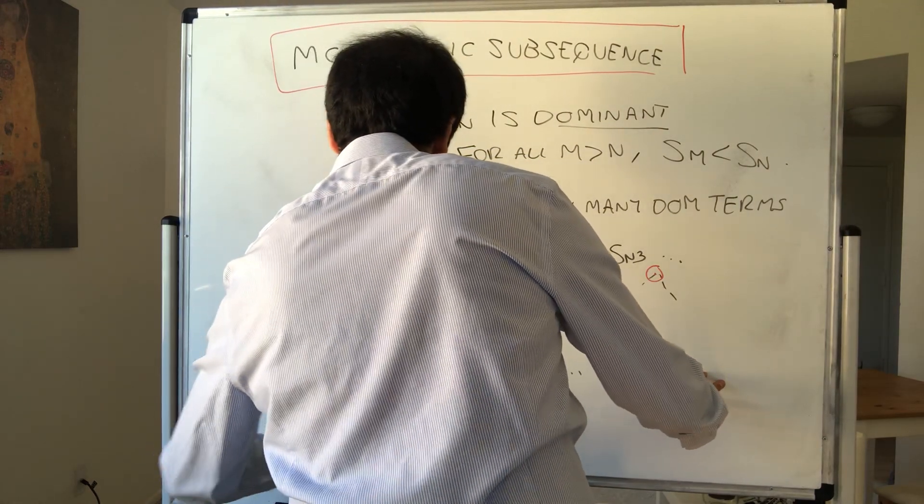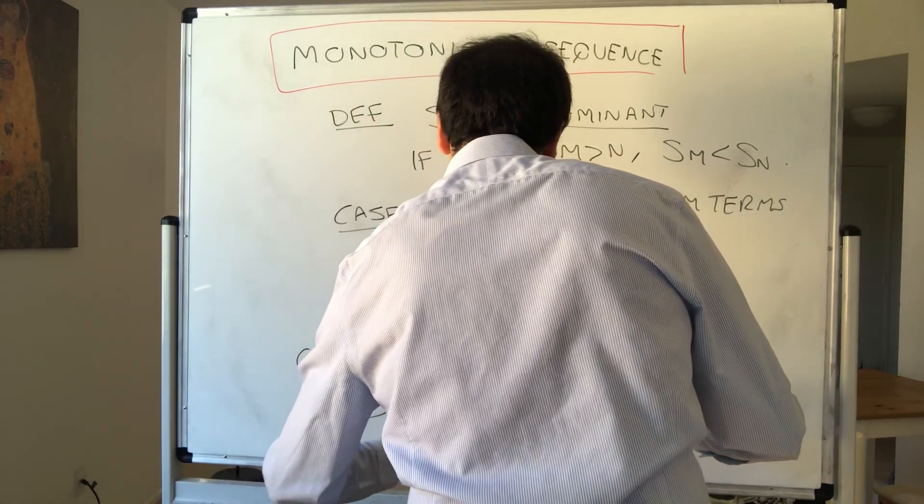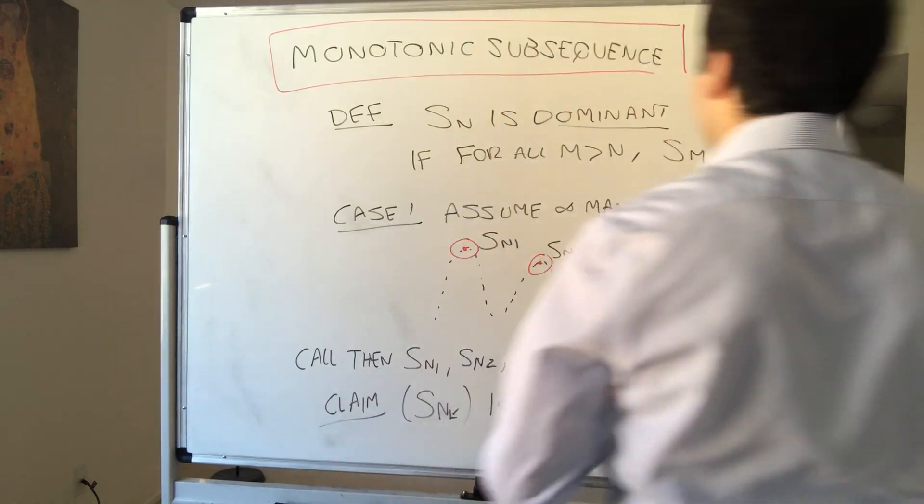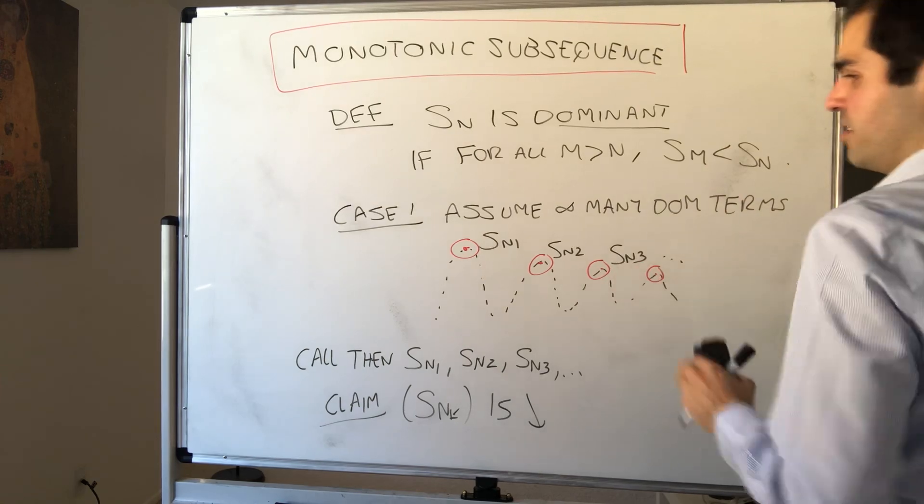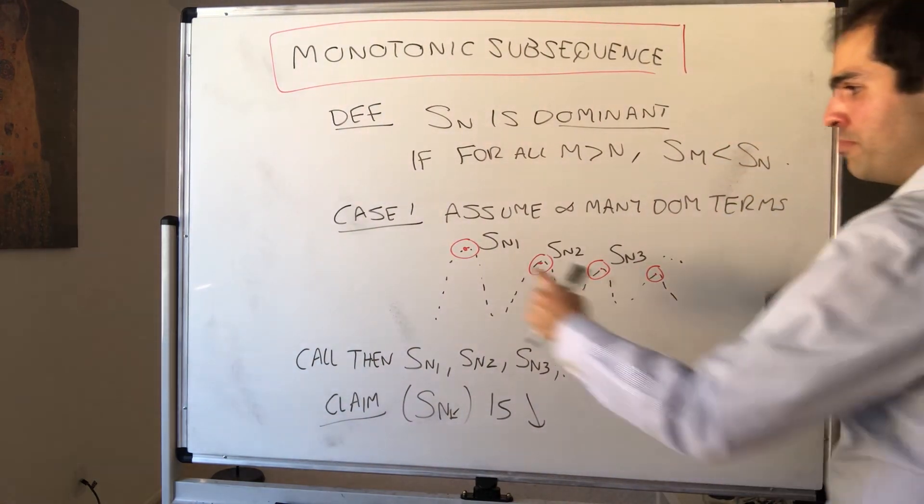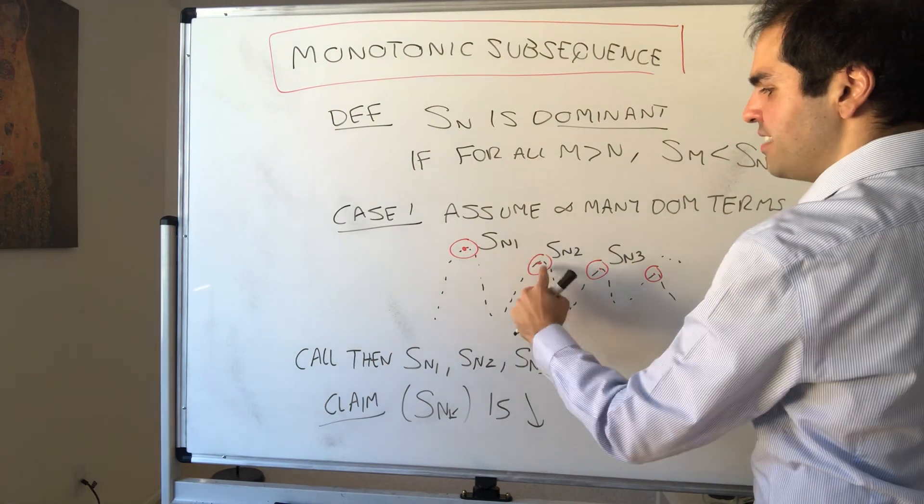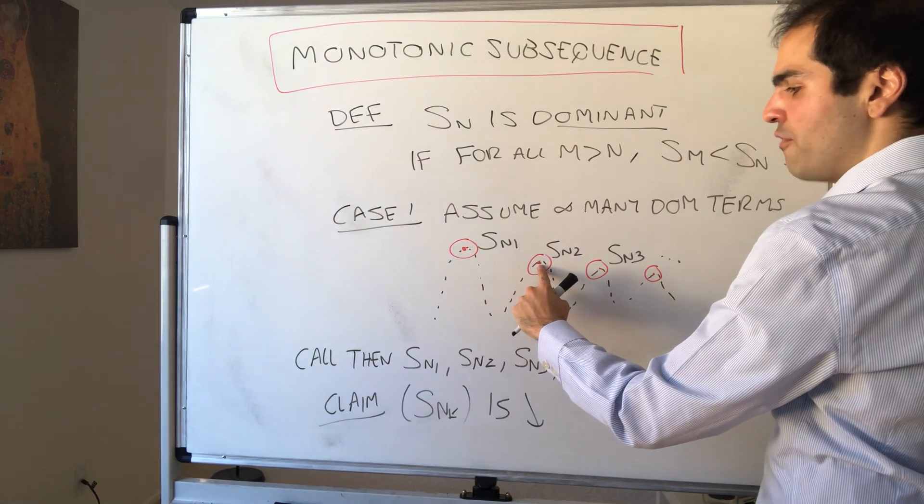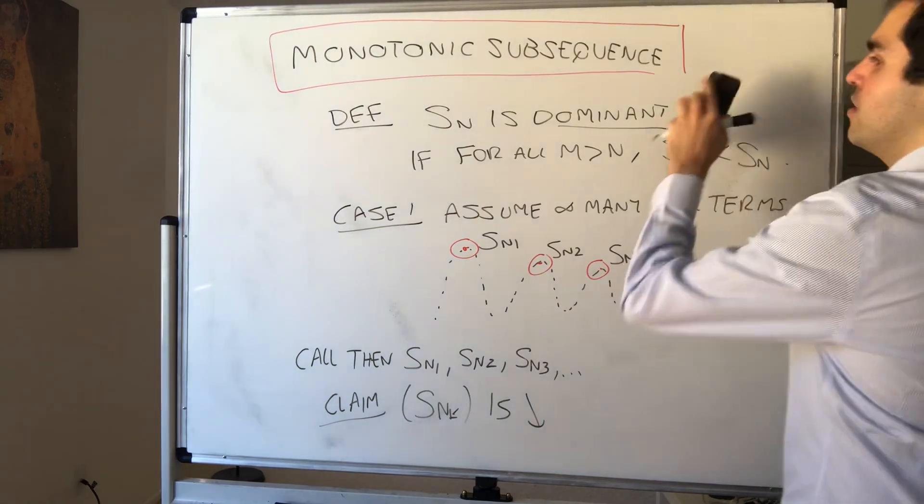And I'm claiming that the sequence SnK works. So claim, the subsequence SnK is decreasing. And why? It's literally just the definition of a dominant term, because, for instance, Sn2 comes after Sn1, but because Sn1 is a peak, we have to have that this is smaller.